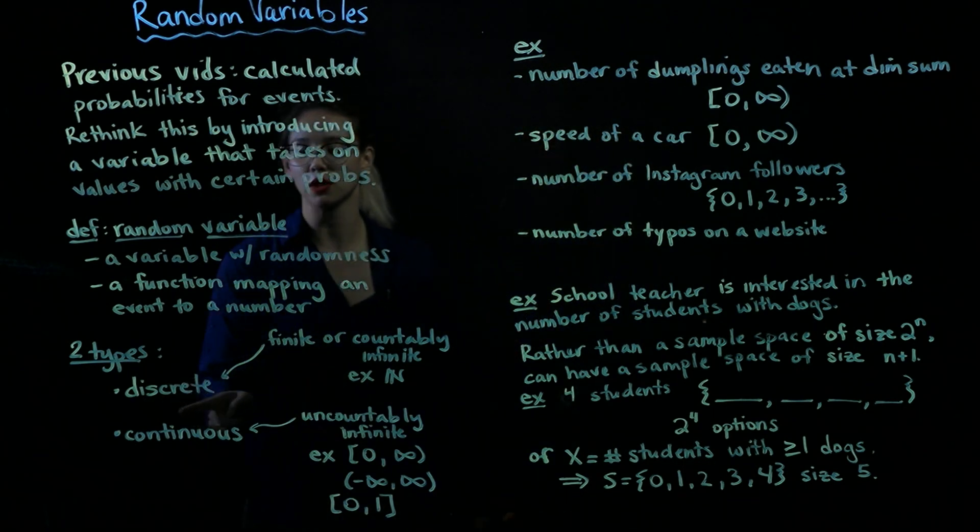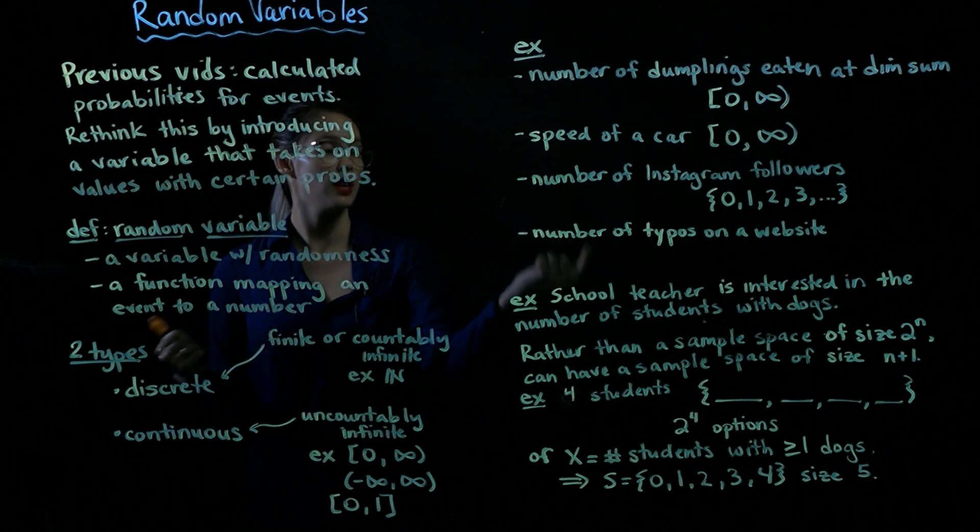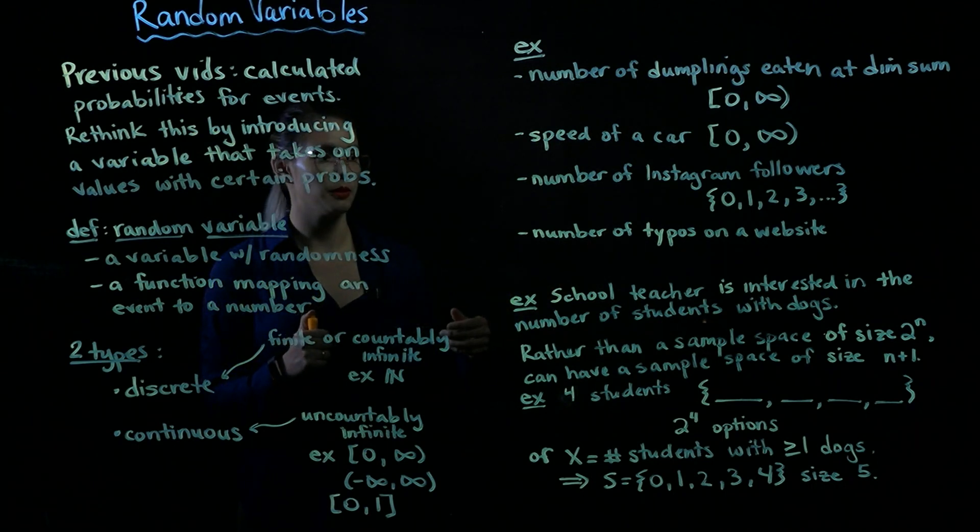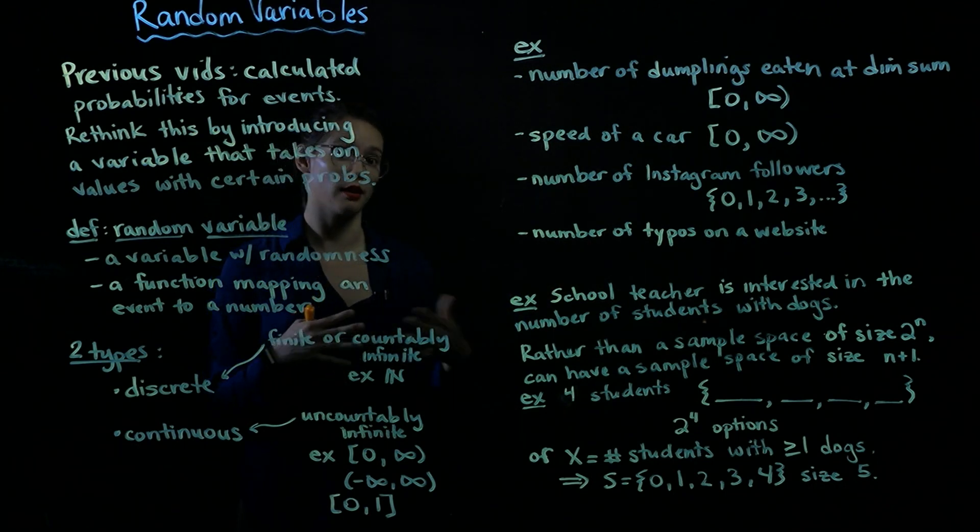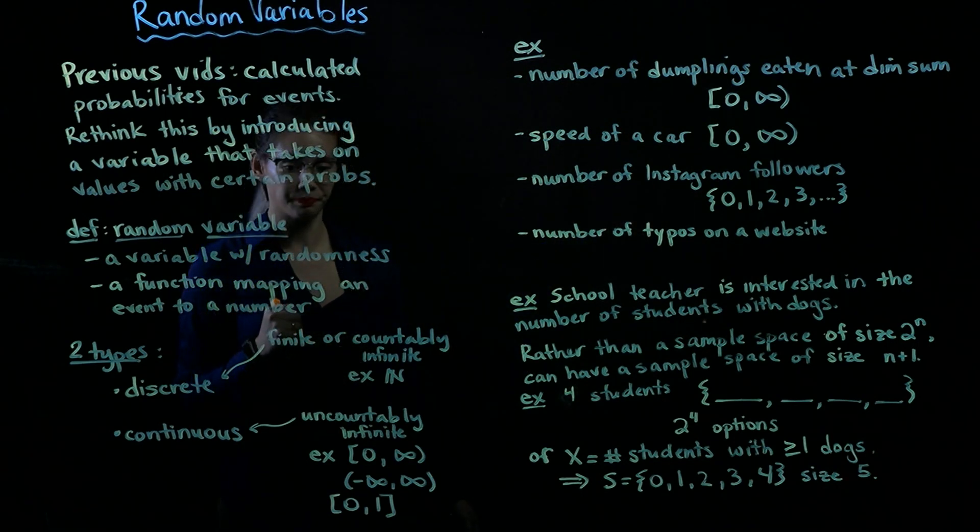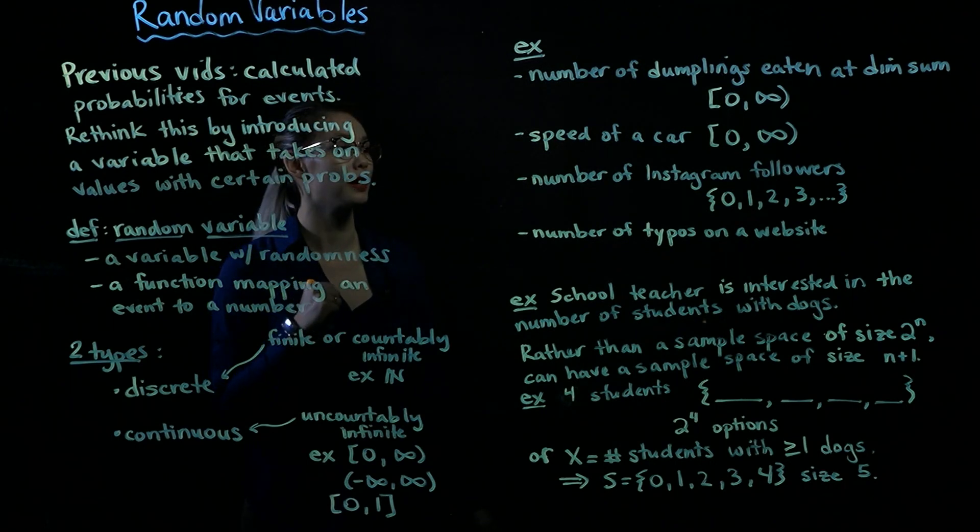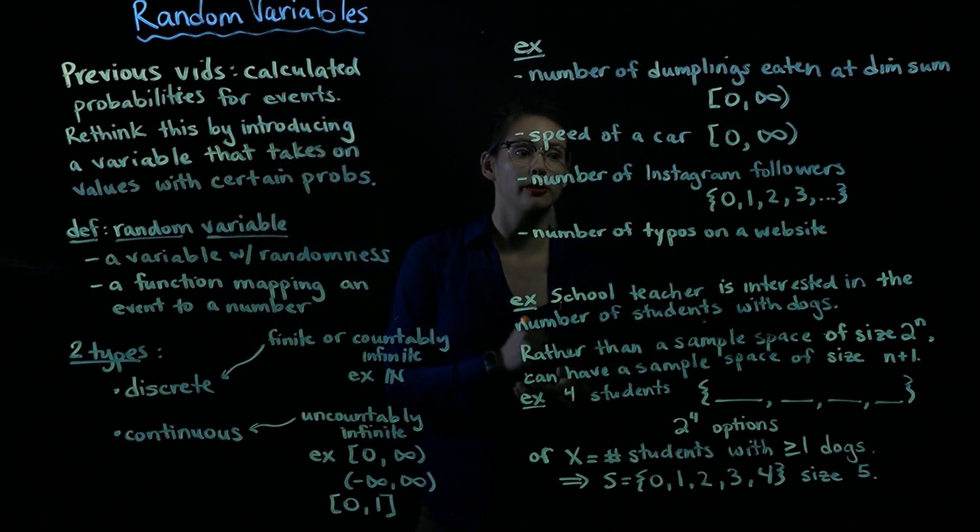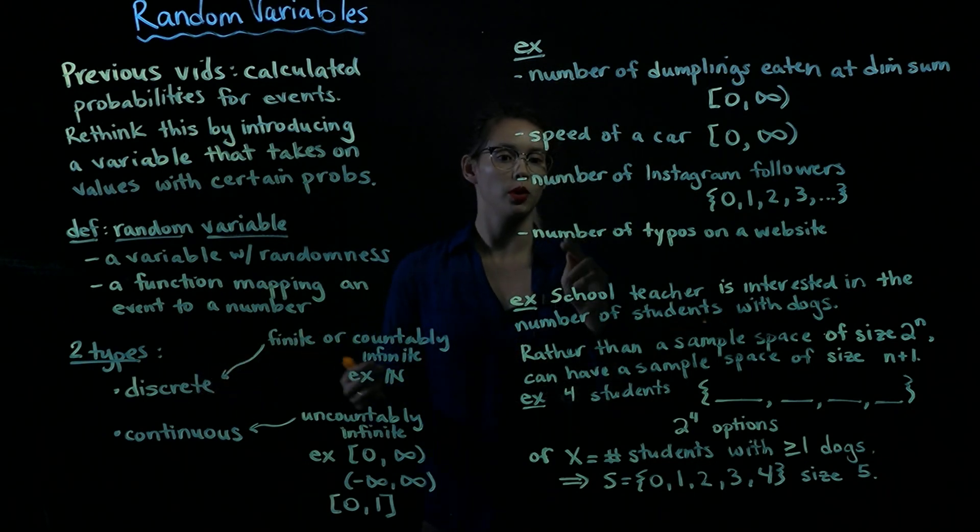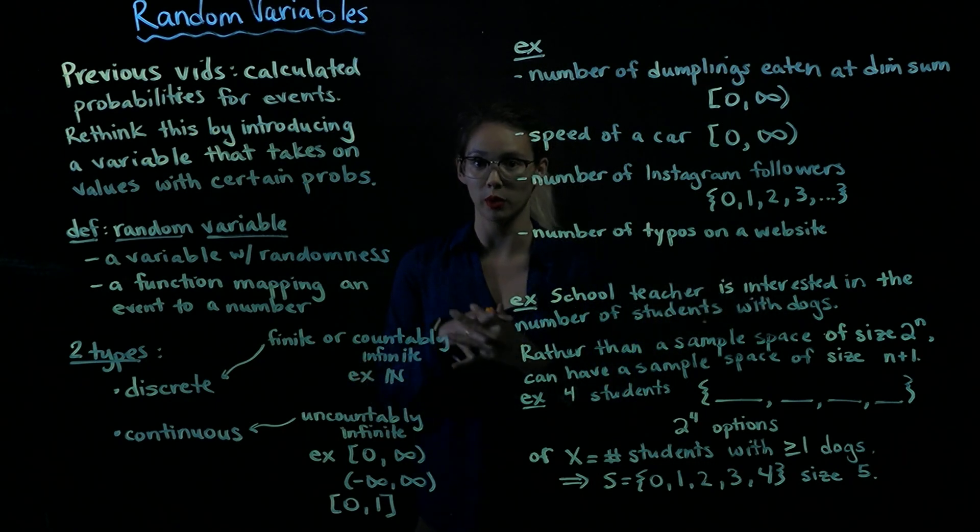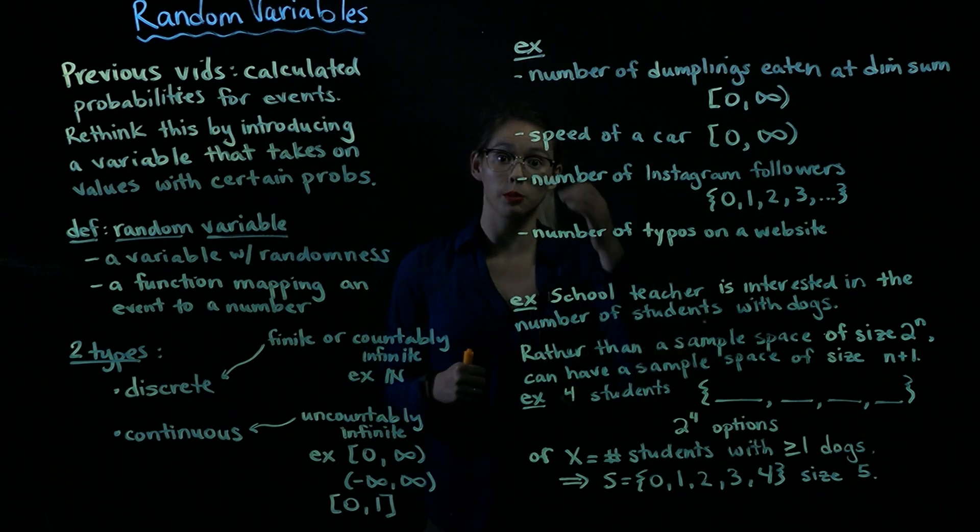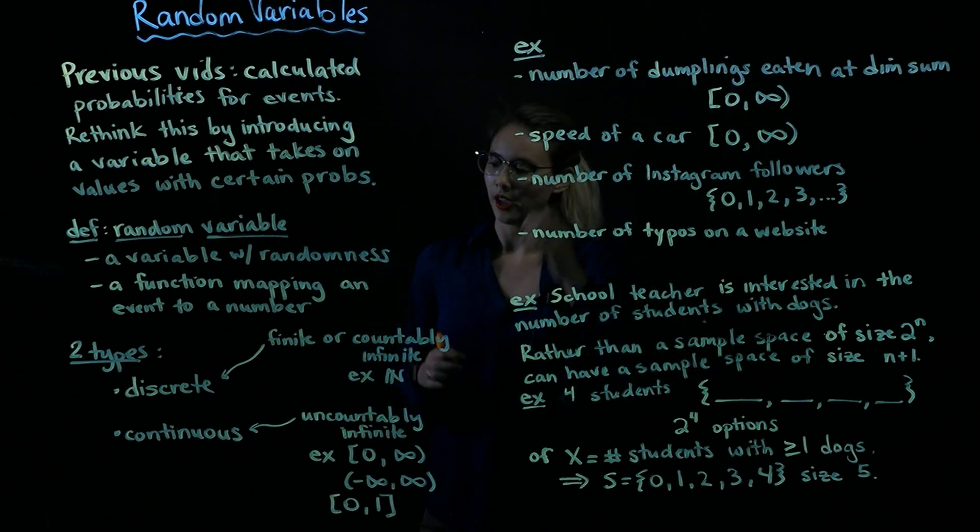Some examples of discrete random variables would be the number of Instagram followers that you might have. So you could have 0, 1, 2, 3, no upper limit. So we could count those. It would take us forever to count the different number of possibilities, but we could count those. So we would have a countably infinite number of Instagram followers that we could have. Similarly, another discrete random variable would be the number of typos on a website. So we could count those. There's no such thing as like 9 tenths of a typo. So we just have certain values that this random variable could take on.